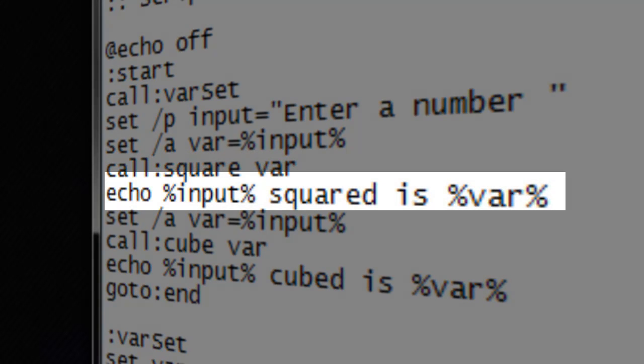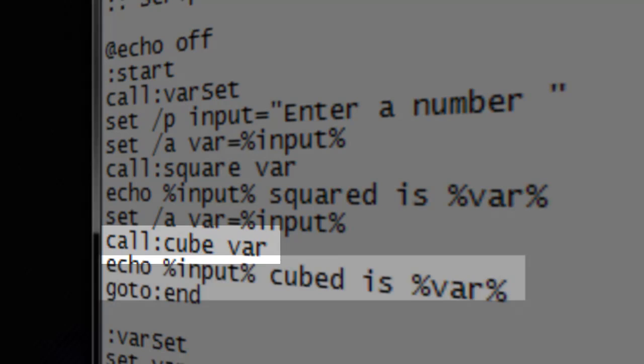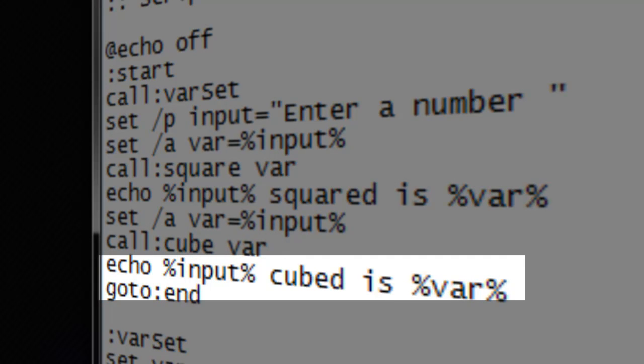Then echo to the screen the number given and its squared result. Likewise, call the cube function also with an argument of var. And again, echo the number given and its cubed results.